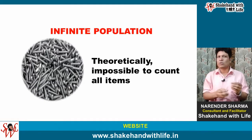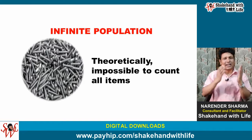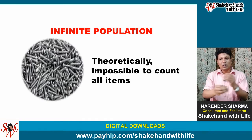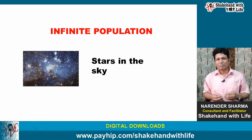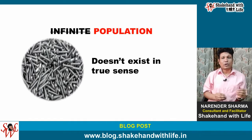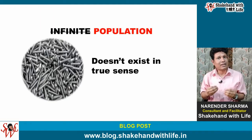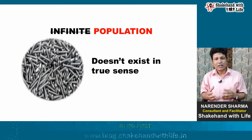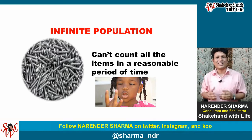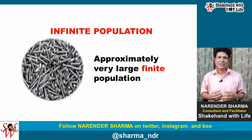In case of an infinite Population, theoretically it is impossible to observe all the items. The number of items is infinite and we can't have any idea about the total number. We can't enumerate or count all the items, such as the number of stars in the sky, rivets manufactured in a company, or birds and insects. However, an infinite Population of physical objects does not exist in the true sense, despite many such populations appearing very large. For practical consideration, the population is treated as infinite because we can't count all elements in a reasonable period of time, and therefore we use the theoretical concept of infinite Population as an approximation of a very large finite Population.